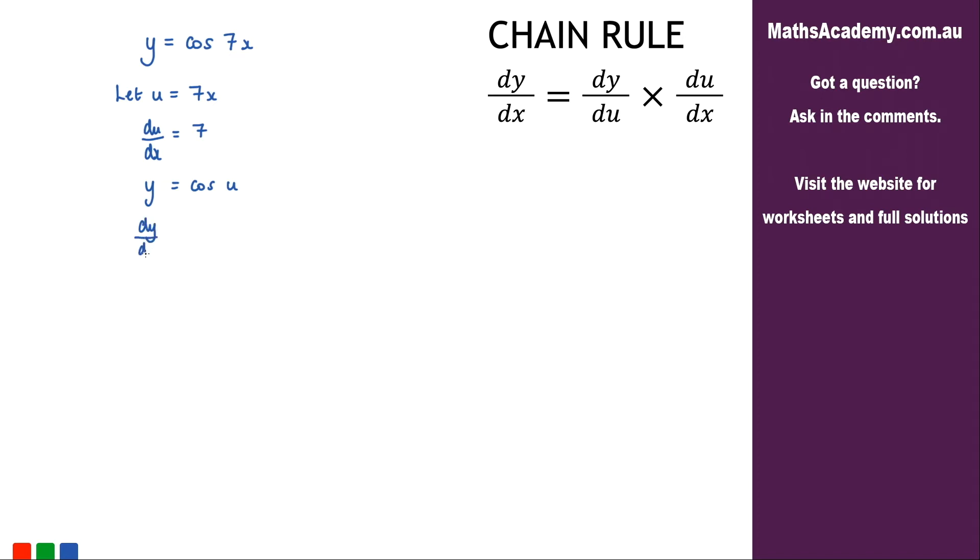So dy by du is equal to... now when we differentiate cosine we get negative sine. So we've got negative sine of u.